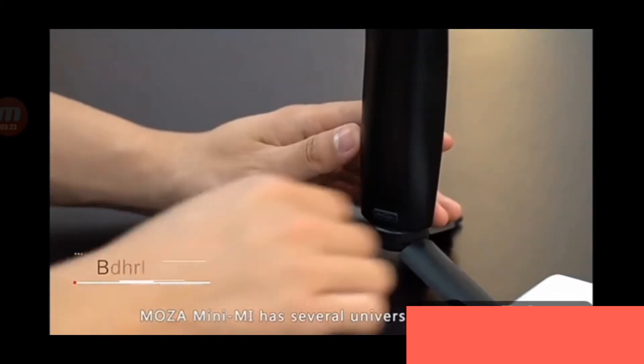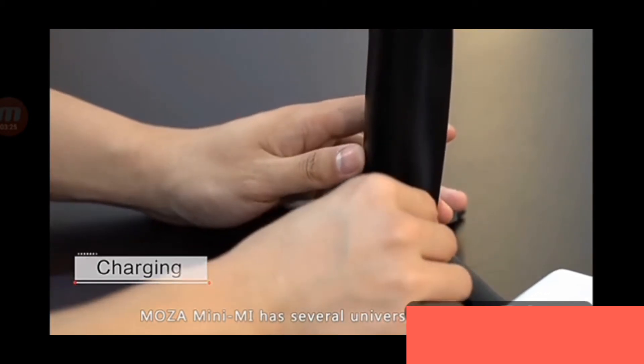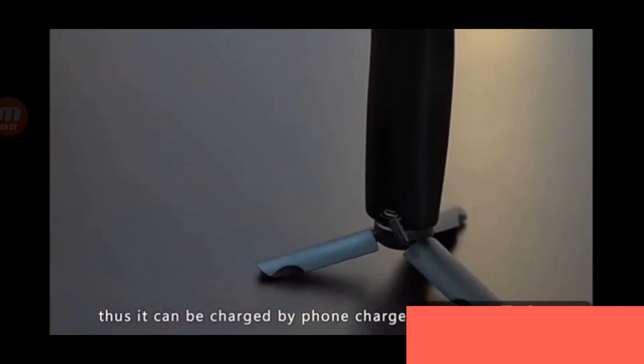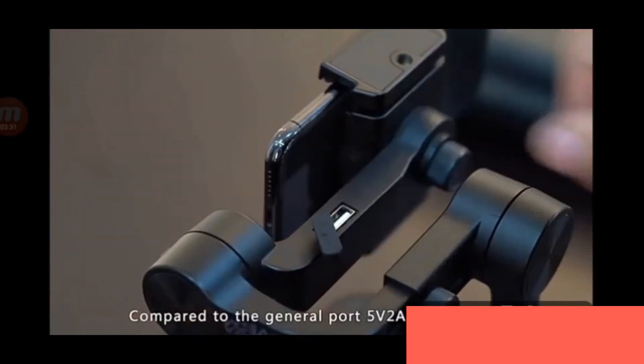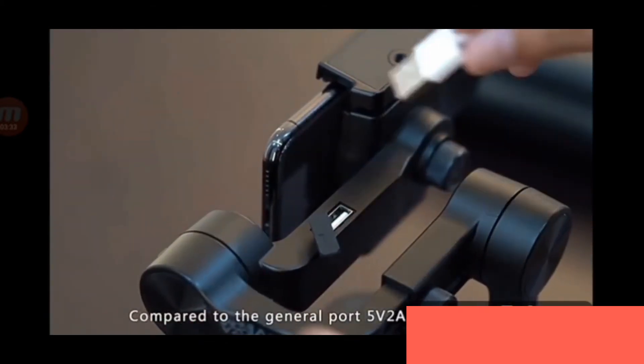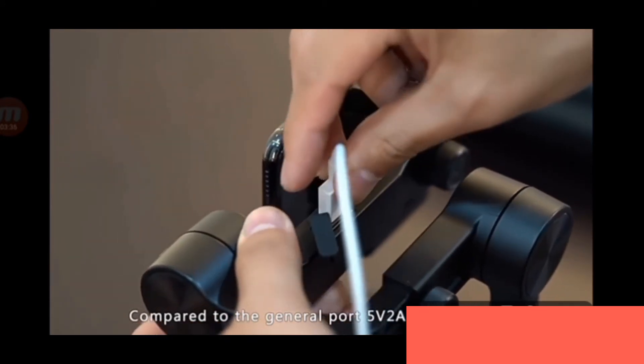The MOZA Mini-Me has several universal USB ports. The bottom USB port can be used to charge the gimbal by a power bank. The gimbal can also power your phone by a 5-volt, 2-amp USB port located on the roll axis.